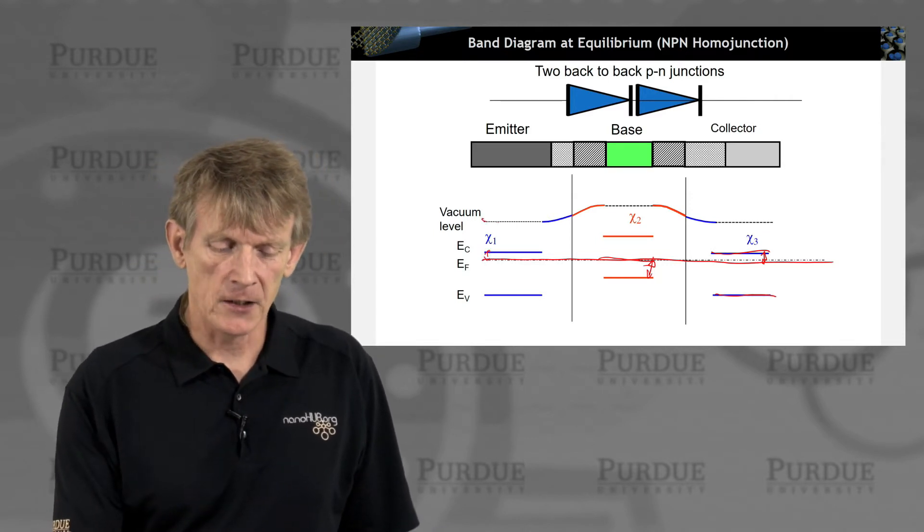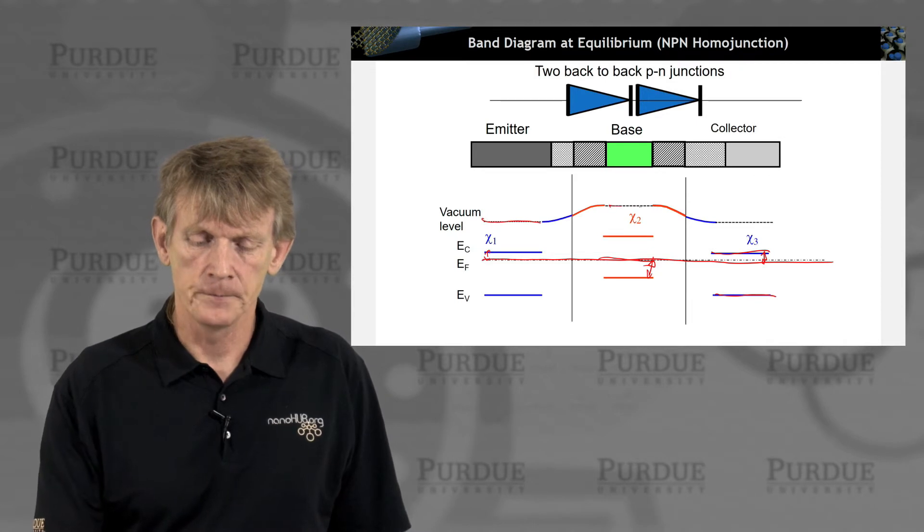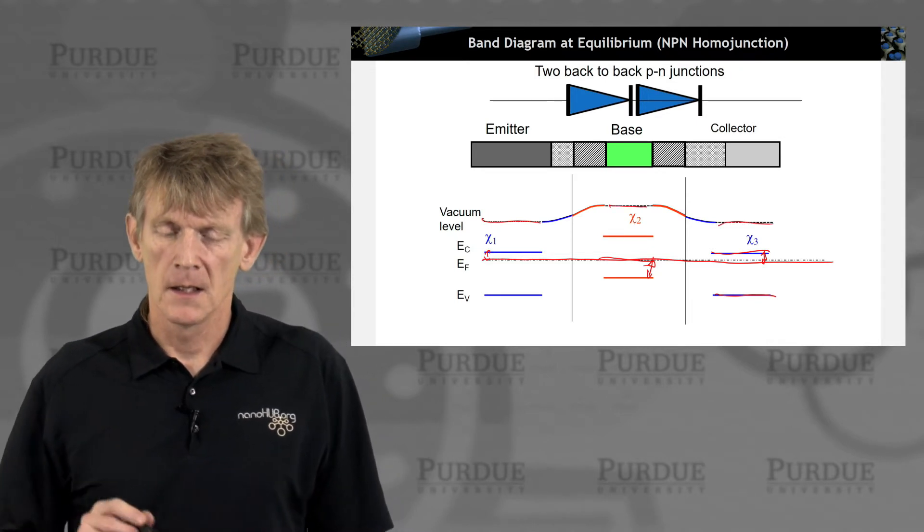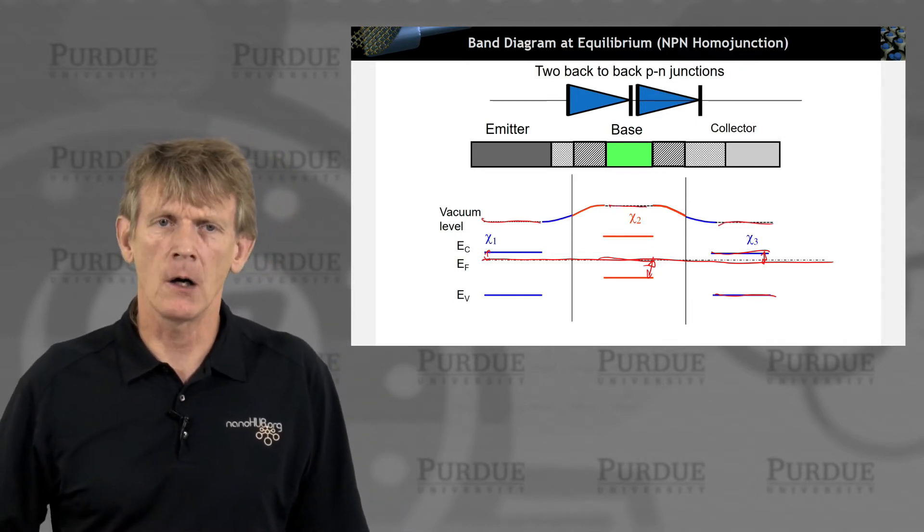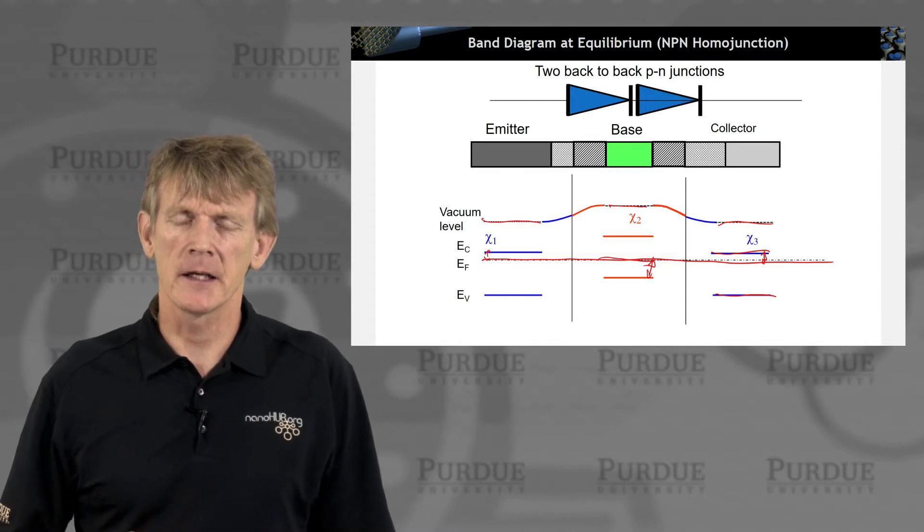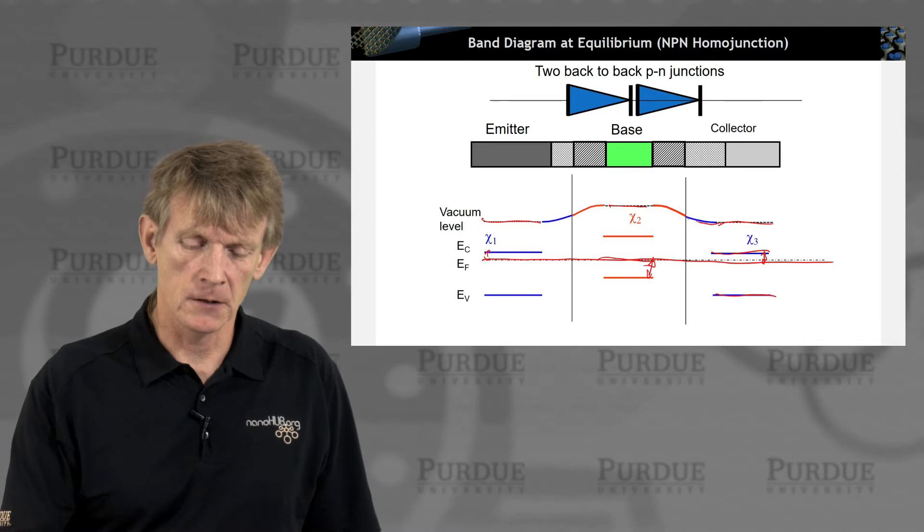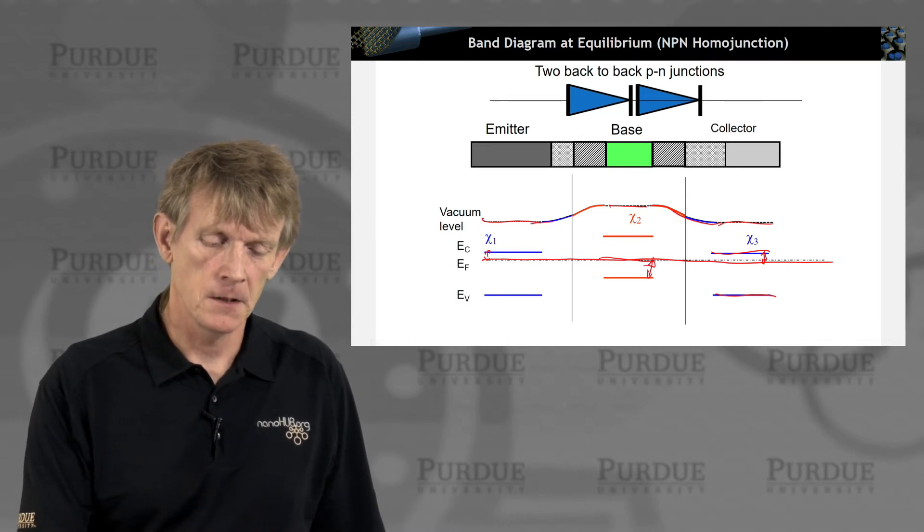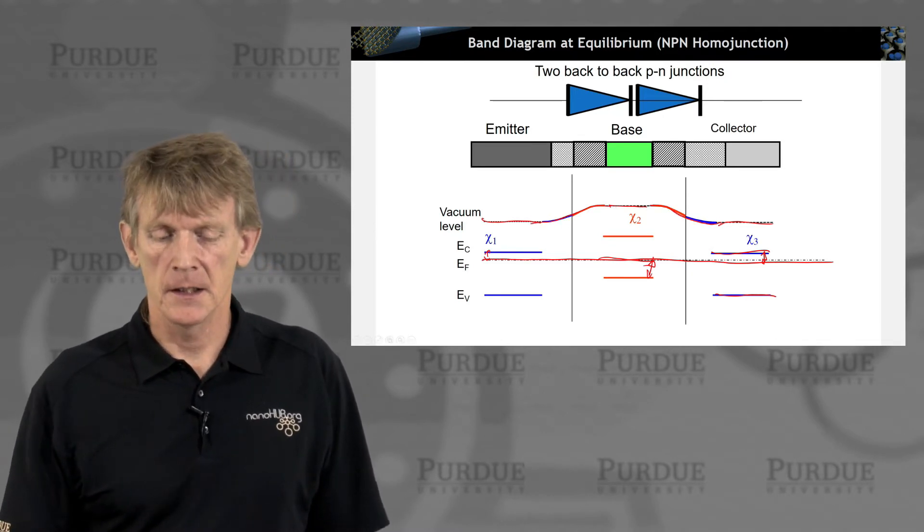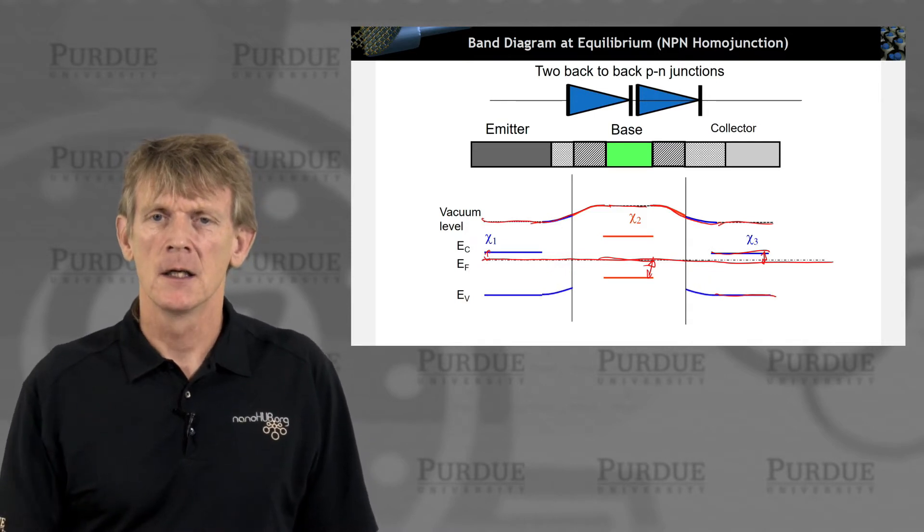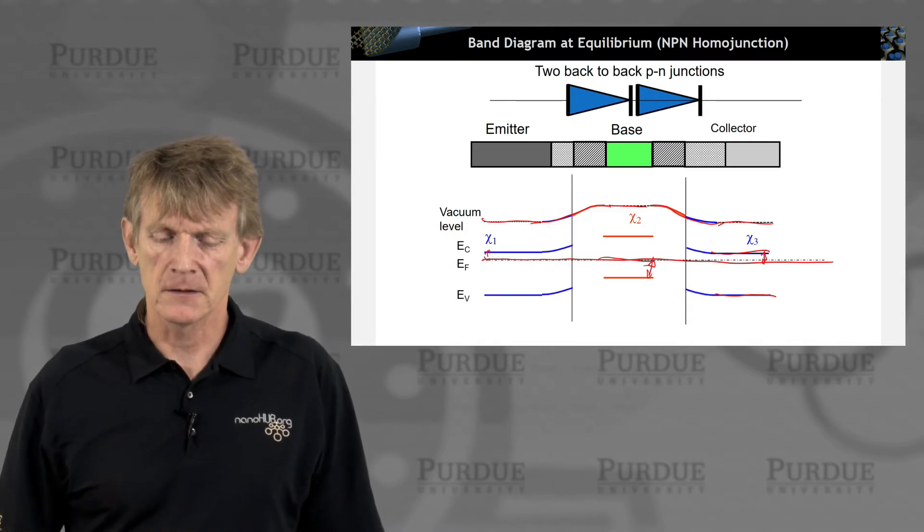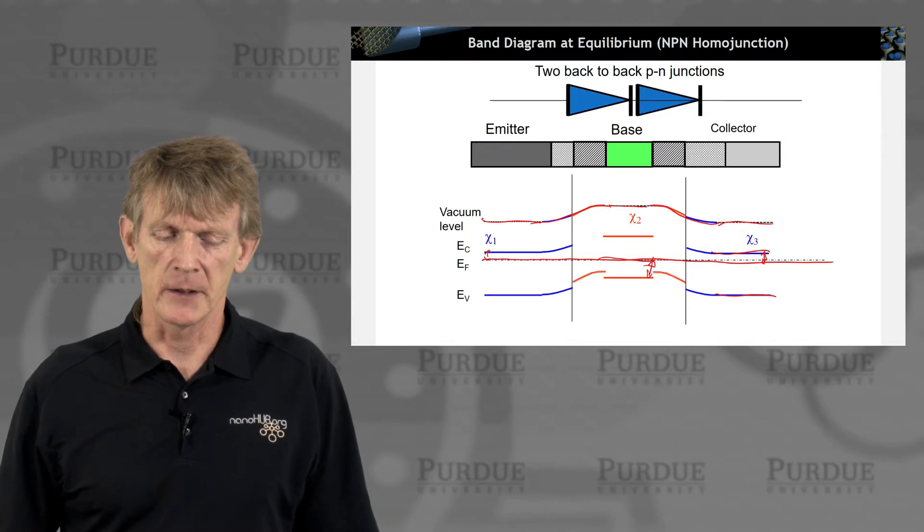And you draw in the vacuum levels for each material, and you seek out a common energy level. This vacuum level all across this device, that's common, so you draw a connection here. And you transfer those connections down and connect the conduction bands and valence bands.